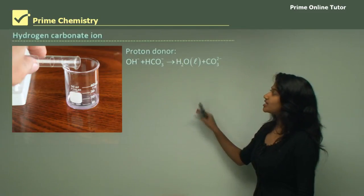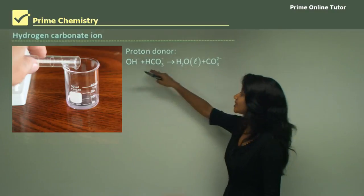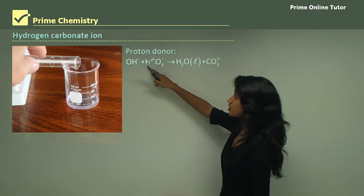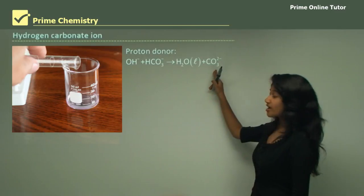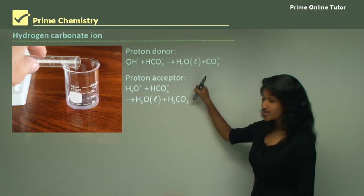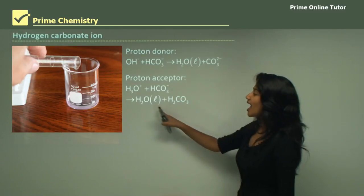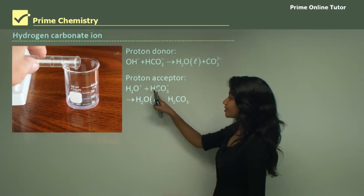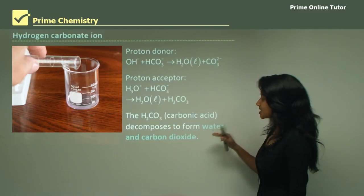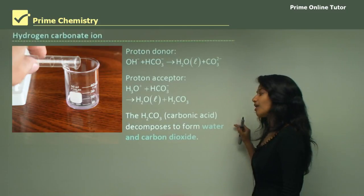Now hydrogen carbonate — a very similar process. We have hydrogen carbonate reacting with a hydroxide ion, and in this case it's acting as an acid. When it's acting as an acid, it's going to donate one hydrogen ion to form a carbonate ion and water. And when it's acting as a base, it's going to react with the hydronium ion to produce carbonic acid and water — so it's accepting a proton from the hydronium ion. Note that carbonic acid decomposes to form water and carbon dioxide.